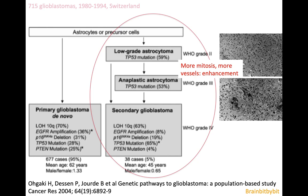In the late 20th and beginning of the new millennium, the search started for the underlying genetic mutations in tumors. One of the largest studies published was from Switzerland, looking at 715 glioblastomas and their gene mutations. There was a scheme showing how low-grade astrocytomas progressed to anaplastic astrocytomas and then to secondary glioblastomas, while primary glioblastomas could also arise. Going from grade 2 to grade 3, there is more mitosis, more vessels, more enhancement — a continuum with arbitrary limits.